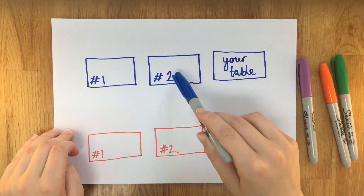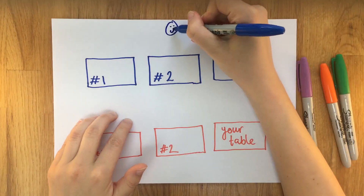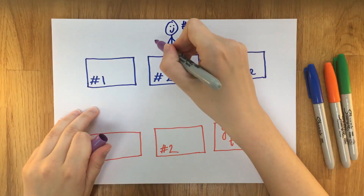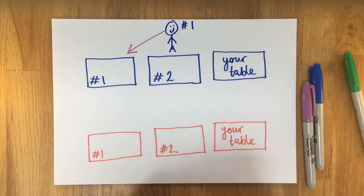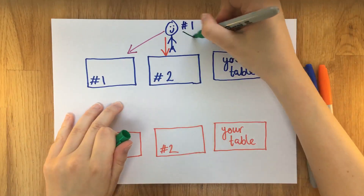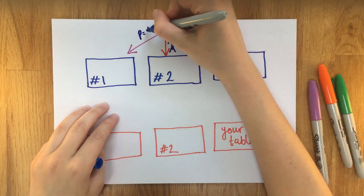Looking at both scenarios, the only way that you get sat at your table is where guest number one has been sat at table number one, so that happens with probability a half. Now let's make it slightly more complicated and look at a three-table example. The tables are booked by guest number one, guest number two, and then yourself. When guest number one arrives we can see that there are three different scenarios that could take place, each equally likely with probability a third.